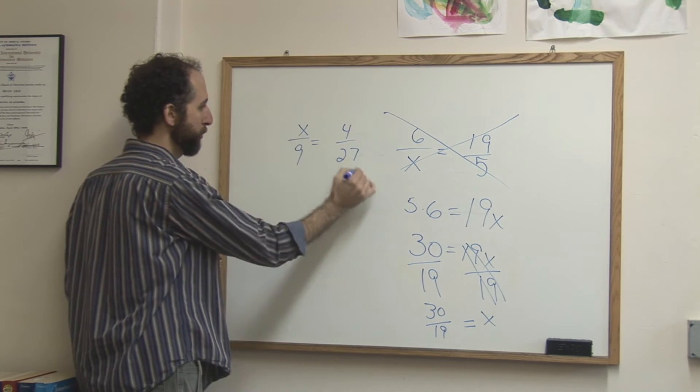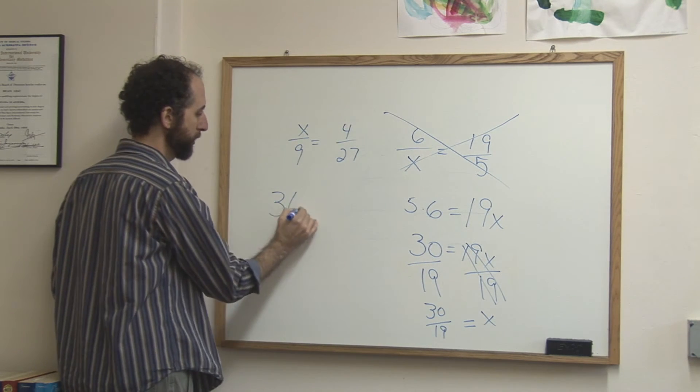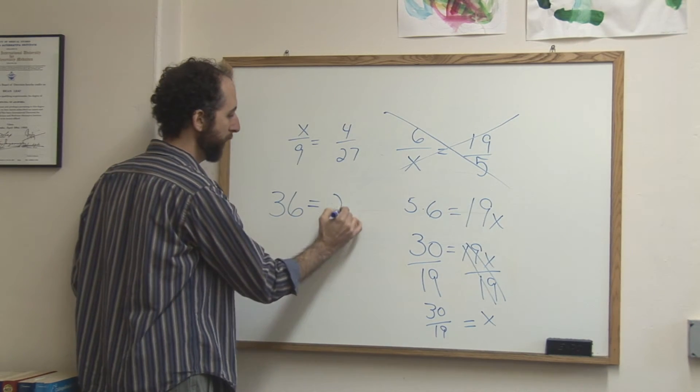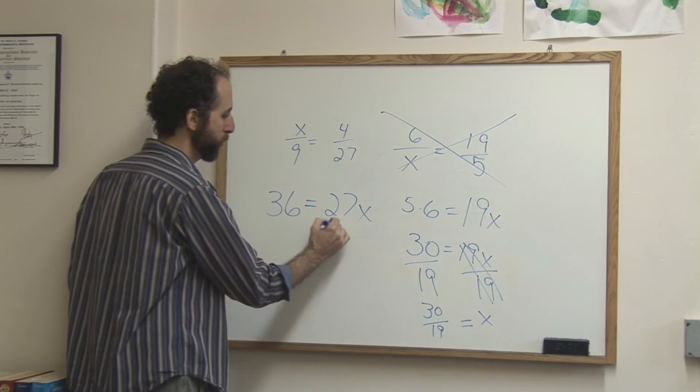Again, you'd cross multiply. 4 times 9 is 36. x times 27 is 27x. You would divide both sides by 27.